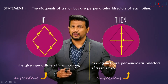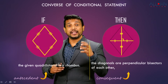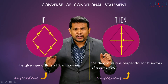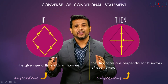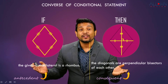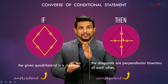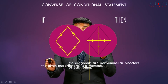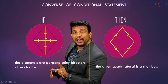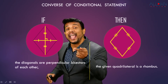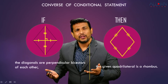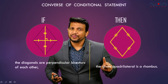Now, given a conditional statement, we also want to write its converse. Converse simply means swapping the places of the antecedent and the consequent. So for our rhombus example, swapping gives: if the diagonals are perpendicular bisectors of each other, then the given quadrilateral is a rhombus.